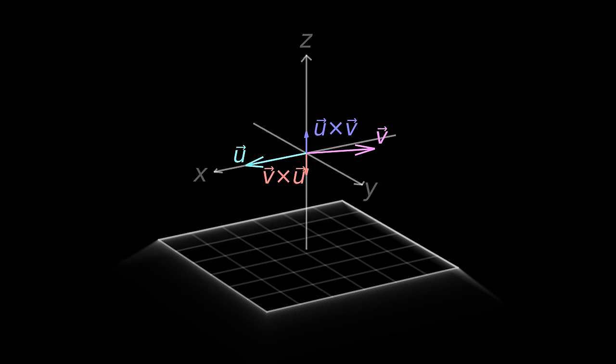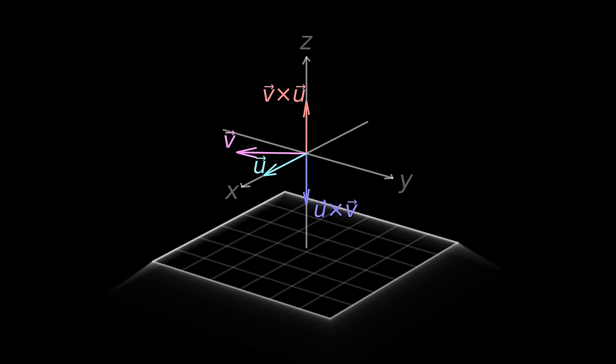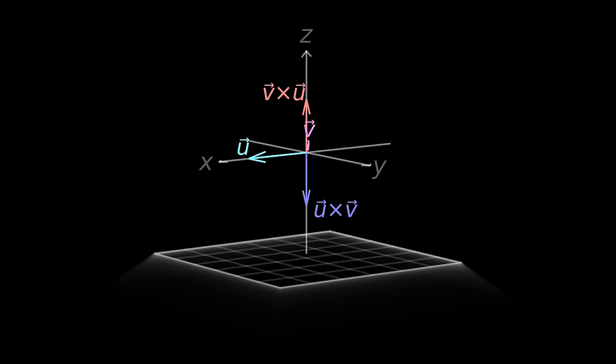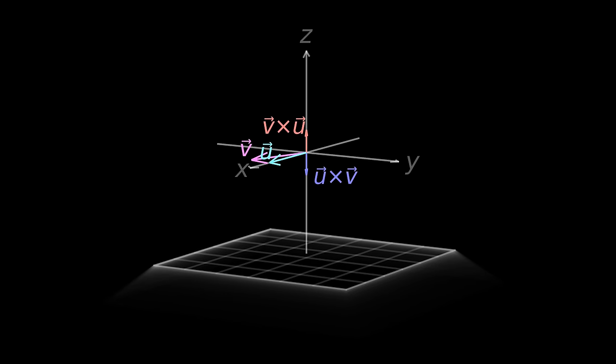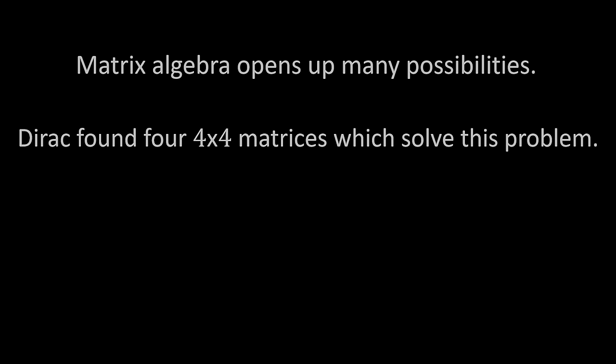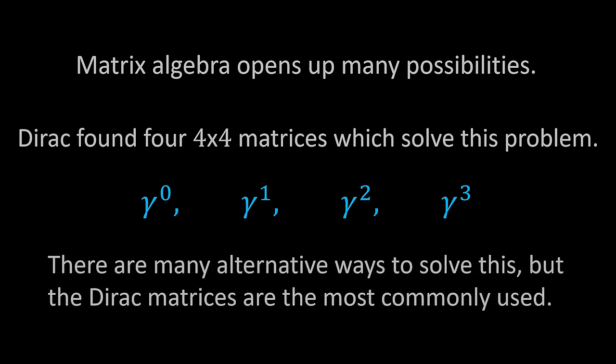As an intuitive example of non-commutative multiplication, consider the cross product: u×v = −v×u by the right-hand rule — same magnitude, opposite direction depending on order. To generalize that notion we find a lot of flexibility in matrix algebra. For the rest of the video we'll look at Dirac's solution for a, b, c, d, where each is a 4×4 matrix. This is not the only solution — many different mathematical objects obey these constraints — but the Dirac matrices are the most standard choice.